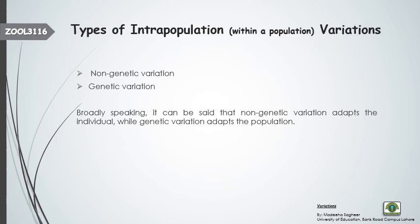As their names suggest, non-genetic variations do not involve the genes or genetic material, while genetic variations involve the genetic material. Non-genetic variations can only affect the individual, not the population. On the other hand, genetic variations are due to genes or DNA, so they can be passed on to the next generation — meaning they can affect the whole population instead of just a single individual.